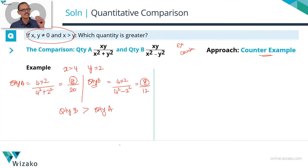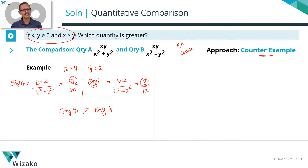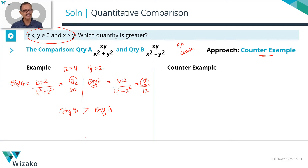Now I need to look for another set of values where Quantity A is greater than Quantity B. If I can find such a counter-example, then the answer is option D. Let's see if that's possible.